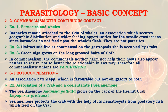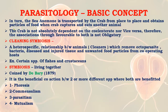In this proto-cooperation, the sea anemone Adamsia palliata grows on the back of the hermit crab Eupagurus. The sea anemone protects the crab with the help of its nematocysts from predatory fish. In turn, the sea anemone is transported by the crab from place to place and obtains food particles when the crab captures and eats other animals. However, the crab is not absolutely dependent on the cnidarian, nor vice versa, so the association — though favorable to both — is not obligate. Such a relationship is proto-cooperation.